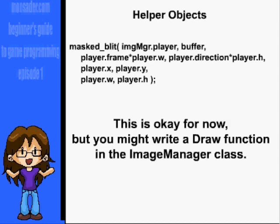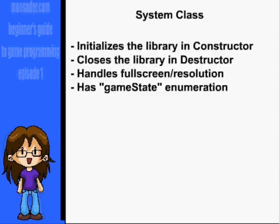You can also write a draw function in the ImageManager class and just pass it the buffer, which image, the player's coordinate rectangle, as well as frame and direction. While not necessary, I'll usually have a system class that initializes the library in the constructor and closes the library in the destructor. It should also hold a boolean for fullscreen, maybe an enumeration to keep track of the game state, and a function for toggling fullscreen.